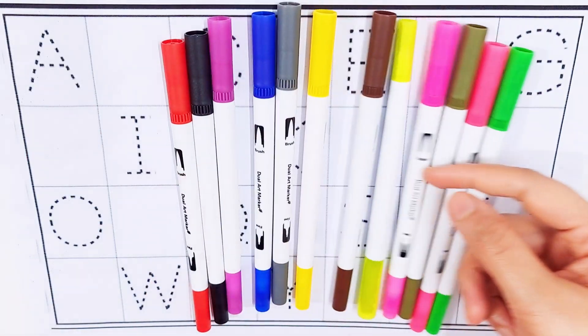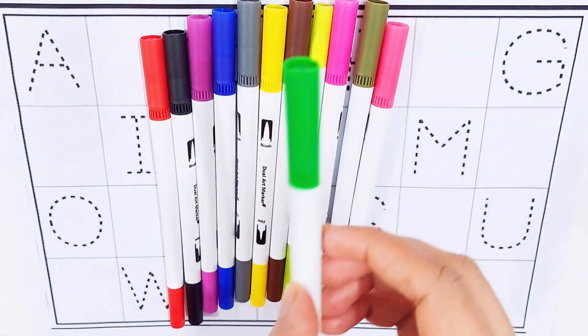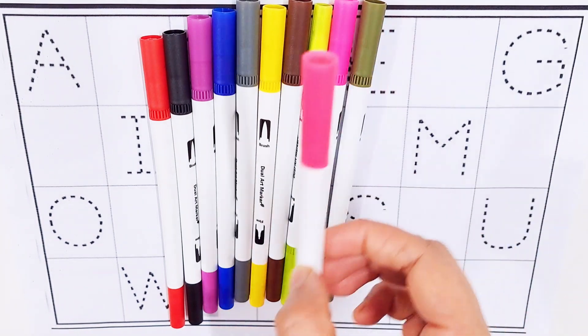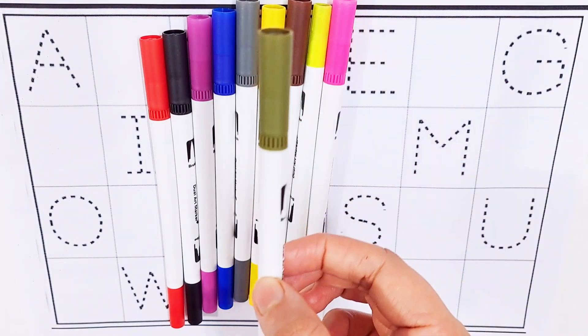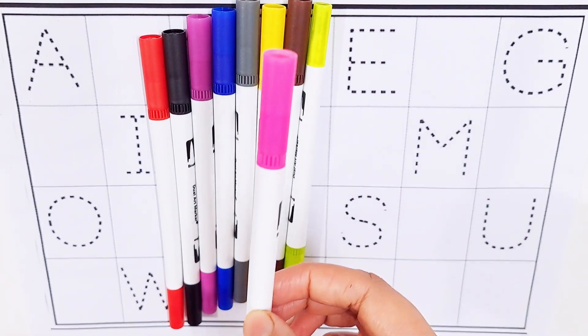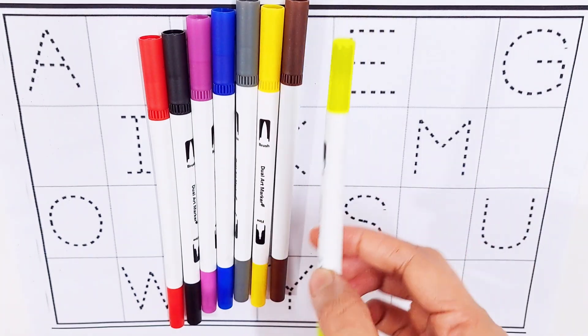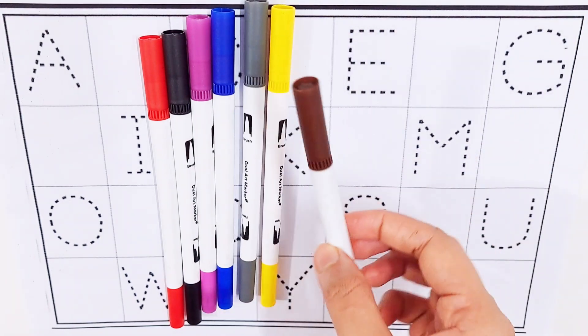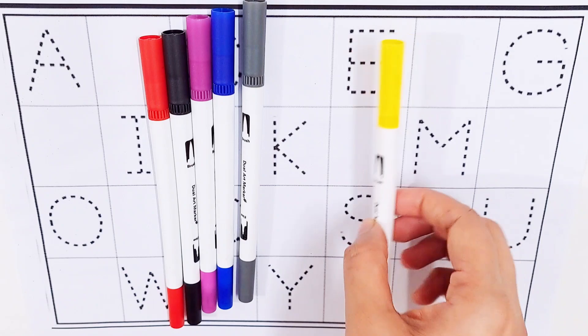Hello guys, let's learn some colors. Green color, pink color, olive color, purple color, lime color, brown color, yellow color.